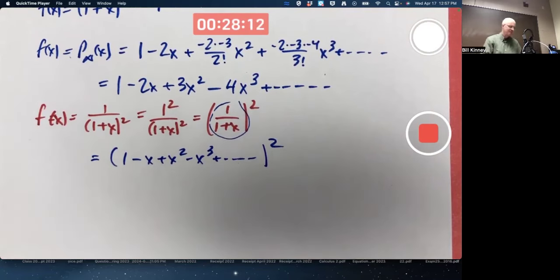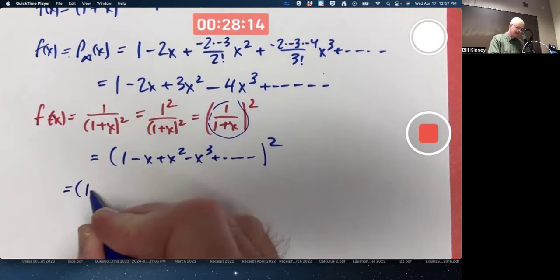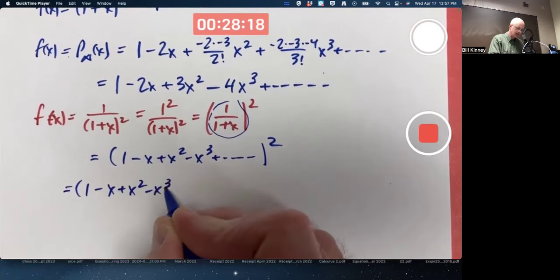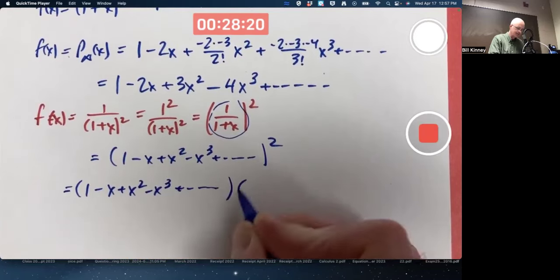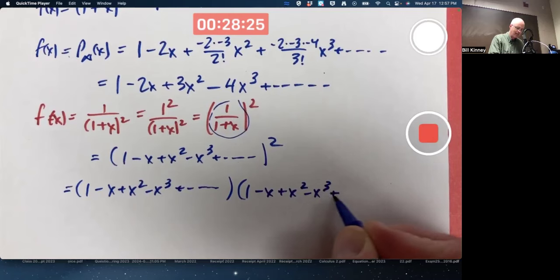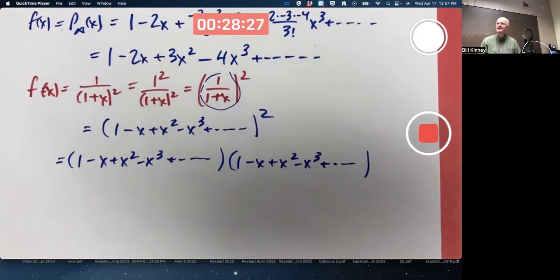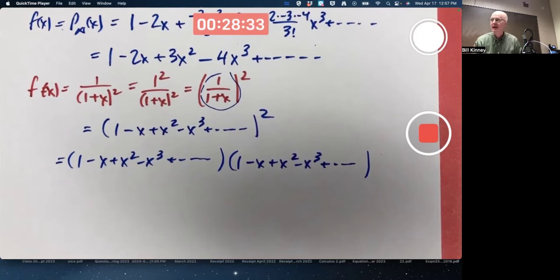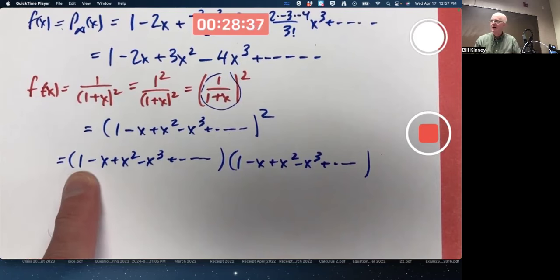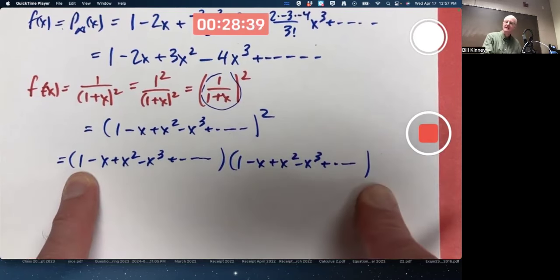This is 1 minus x plus x squared minus x cubed, etc. Squared. Can I square this infinite series to get the answer? Yes. This is foil on steroids. Well, it's not really foil. I am multiplying two infinite series. How do you do that? Step by step, very carefully.